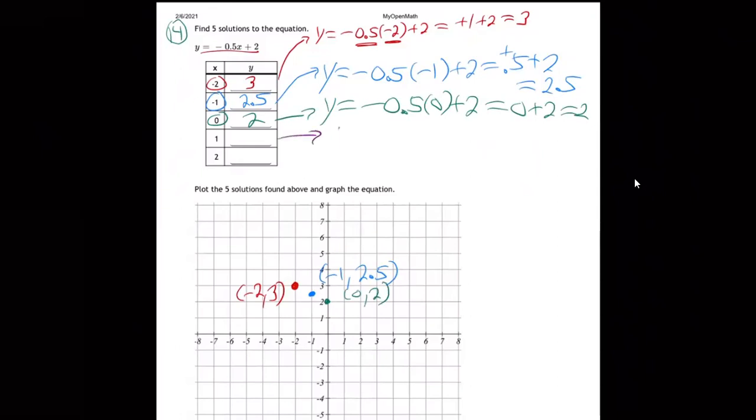So they're lining up. And then next one: y equals negative 0.5 times 1, which is negative 0.5. Negative 0.5 plus 2 is positive 1.5. So that's over 1, up 1.5, right there.